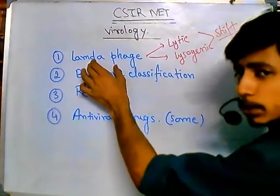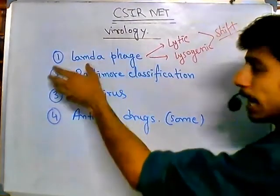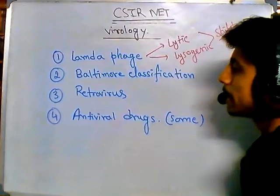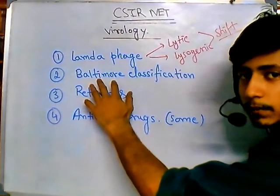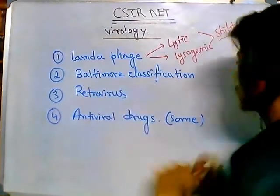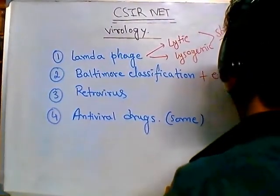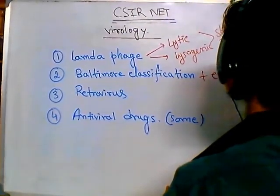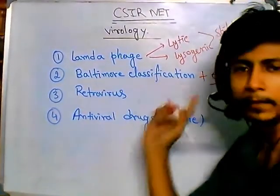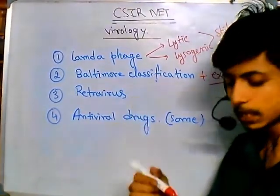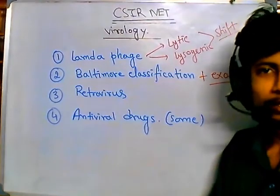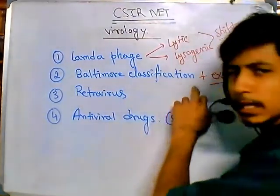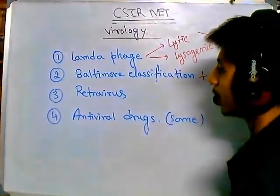So this is the major part — the life cycle of lambda phage and how they shift between these cycles. The rest includes the Baltimore classification of viruses, obviously including examples. There are five different classes; all the class names and their examples are very important, with real examples of viruses.